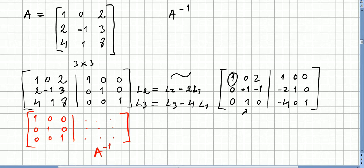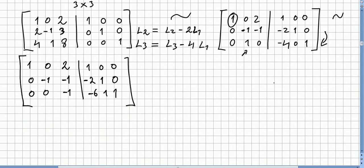Now I need to get a zero in the remaining position, so I'm going to add these two rows together. Zero plus zero is zero, minus one plus one is zero — I've reached my goal. Minus one plus zero is minus one, minus two minus four is minus six, and so on. Now I already have zeros in the correct positions and ones on the main diagonal.